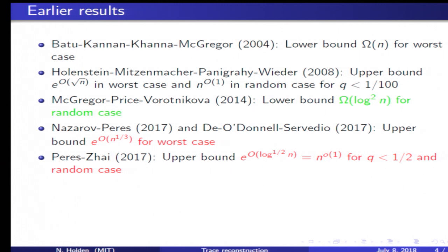The previous known upper bounds are shown in red on the slide. Peres and Zhai proved that when the deletion probability q is less than a half, then it's possible to reconstruct X with e to the power root log n traces.